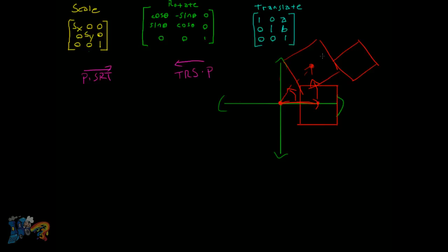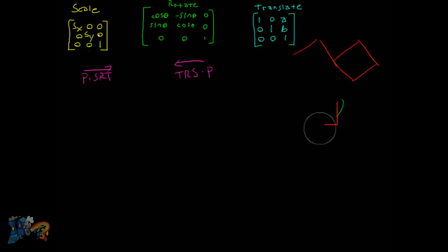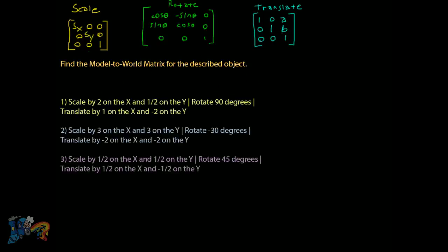This is what happens if you rotate after you've already translated — you get orbiting instead of a local rotation. Interestingly, if you do want an object to orbit around another object, you translate so that the target is at the origin, perform the rotation, then translate back. But for normal rotation we don't want that, so we always scale, then rotate, then translate.